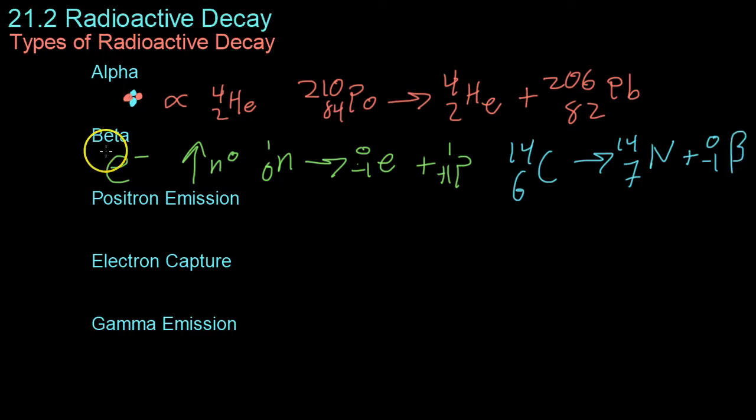Now positron emission is very similar, except instead of emitting an electron, you emit a positron, which is the antiparticle of an electron. It's basically an electron with the same mass and spin, except with a positive charge. And this is when there are too many protons in an atom. It will decay into a neutron to balance out the stability. So your proton with one AMU and one charge can decay into a neutron and a beta particle, which is just a positive electron.